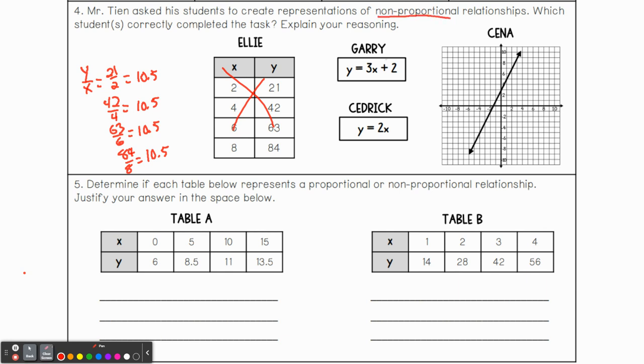So what about Gary? Well, Gary is non-proportional because he has the constant added to his equation. So we're going to circle that one. Cedric is not because he doesn't have anything added to it. So his is proportional and Sina is also proportional because it doesn't go through zero, zero. It goes through the Y intercept.